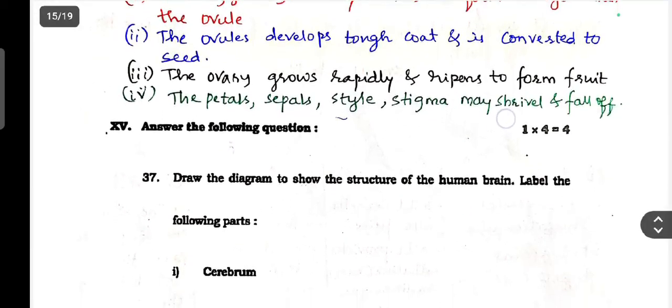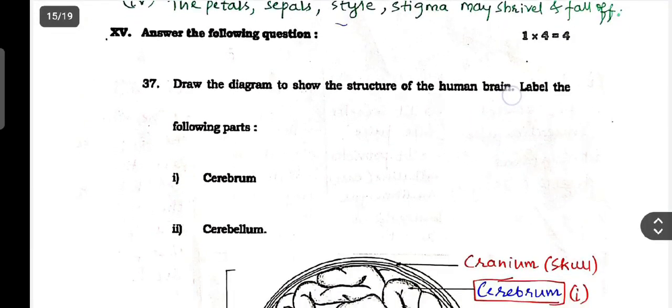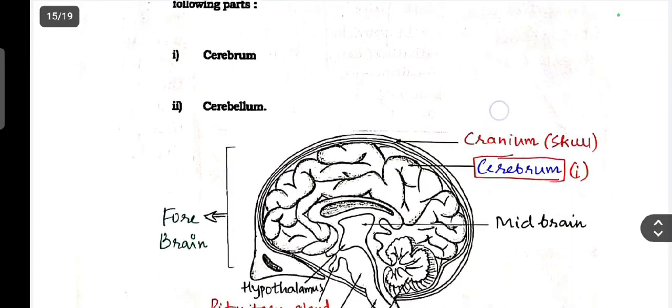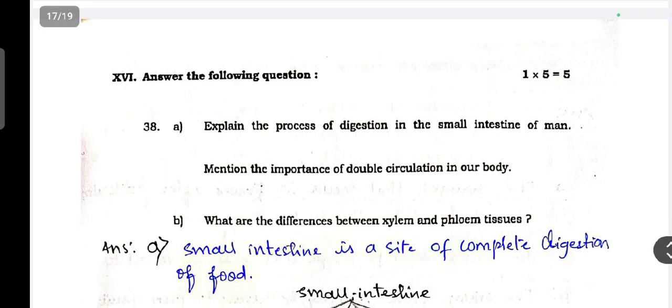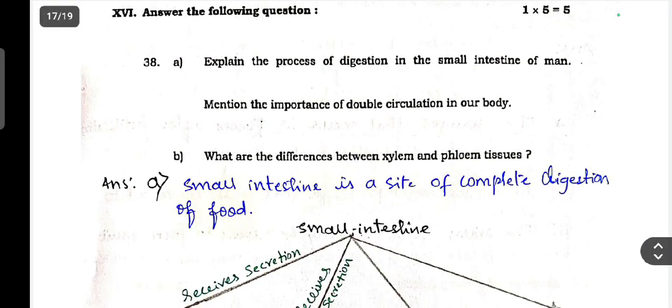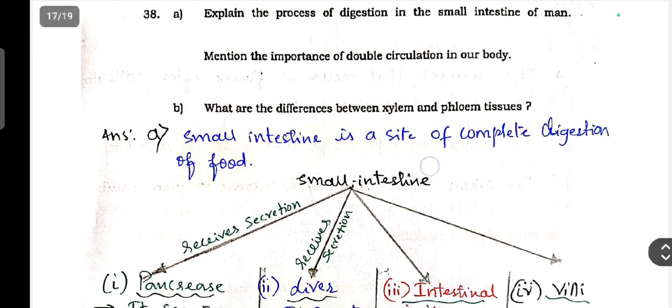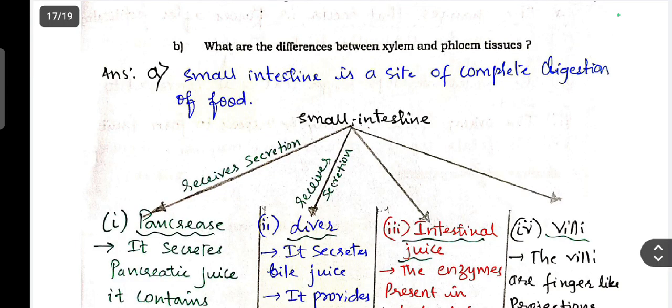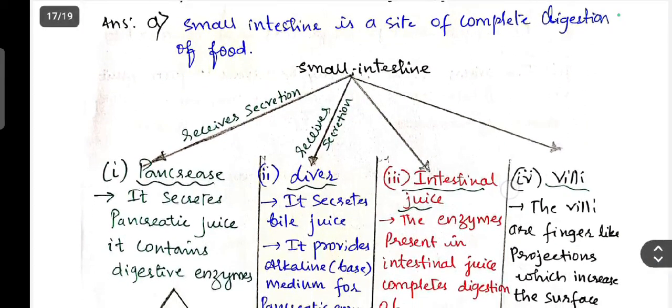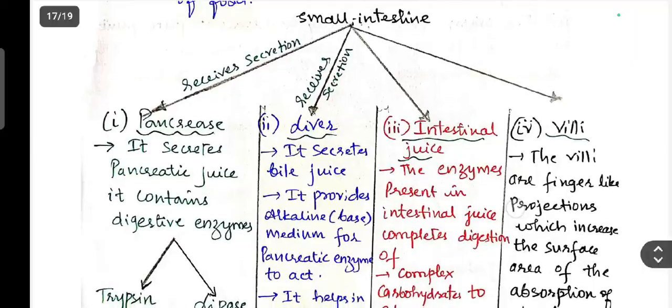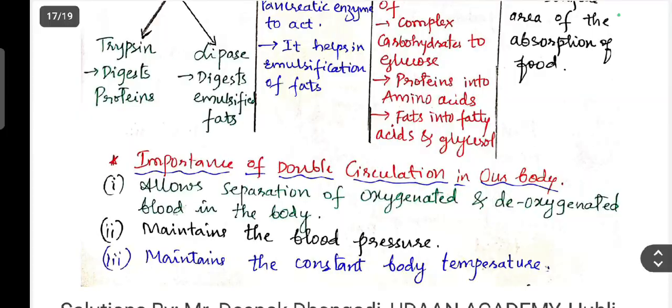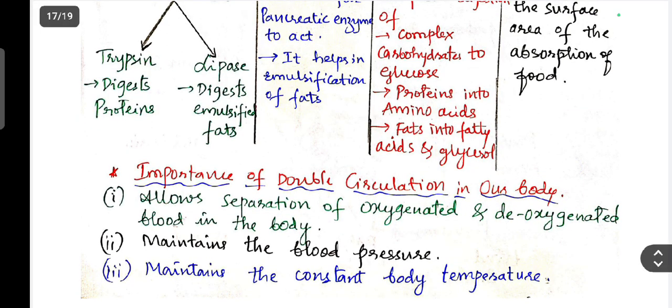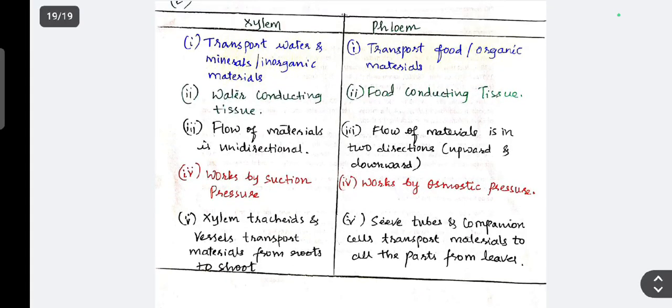Next one, four mark question. Draw the diagram to show the structure of human brain. Label the following parts: cerebrum and cerebellum. Five mark question. Explain the process of digestion in small intestine of man. Mention the importance of double circulation in our body. What is the difference between xylem and phloem tissue? Next question, xylem and phloem - difference between xylem and phloem. This is it.